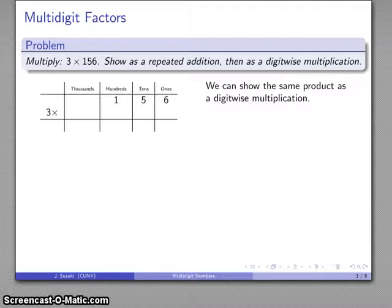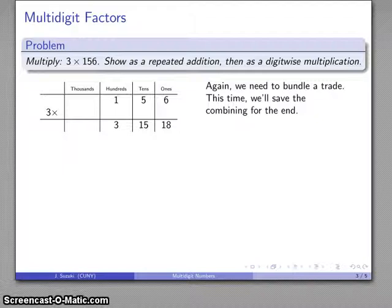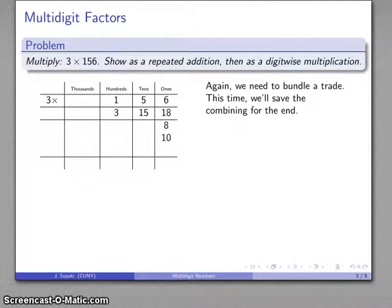Now if I want to show this as a digit-wise multiplication, again, the thing that I'm doing here is I'm taking three of each of these amounts, so I'm taking three ones, three fives, three sixes, and I'm going to write them down in the appropriate places. And again, this time I'll bundle and trade. This time I'll actually save the combining for the end of the problem. So this 18 over here in the rightmost column, that's again a 10 and an 8, and I'll move that 10 over.